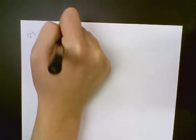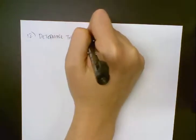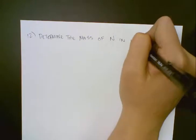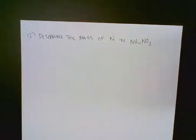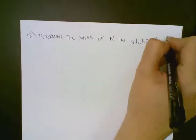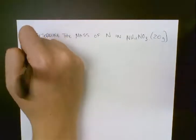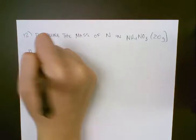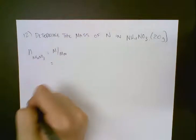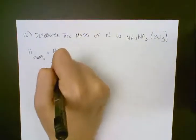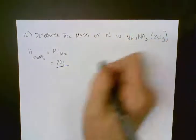The next problem we're going to go through is question number 12. Question 12 asks you to determine the mass of nitrogen in ammonium nitrate, and we also know we have exactly 20 grams of ammonium nitrate. The first thing we need to do is figure out our moles of ammonium nitrate — that's going to be mass divided by molar mass. Our mass is given in the question: 20 grams. And we can figure out our molar mass because we know the formula of ammonium nitrate.